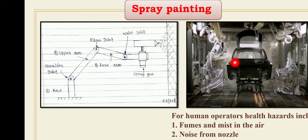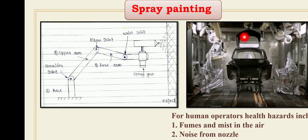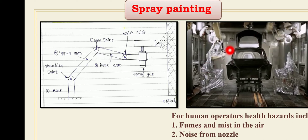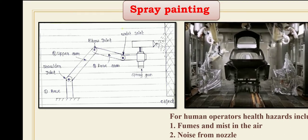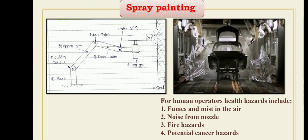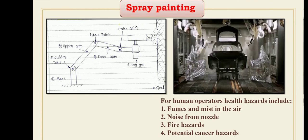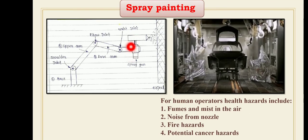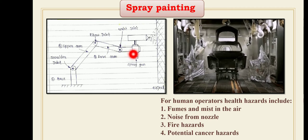This animation shows exactly the application of spray painting in the automobile sector or automobile industry. In the robot spray painting operation, the spray painting gun is the end effector, which is directly connected to the wrist joint.